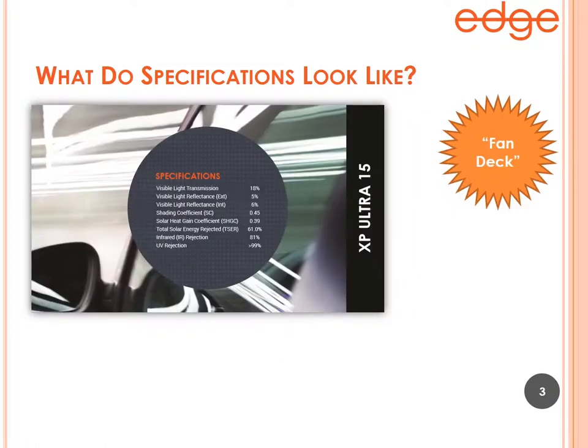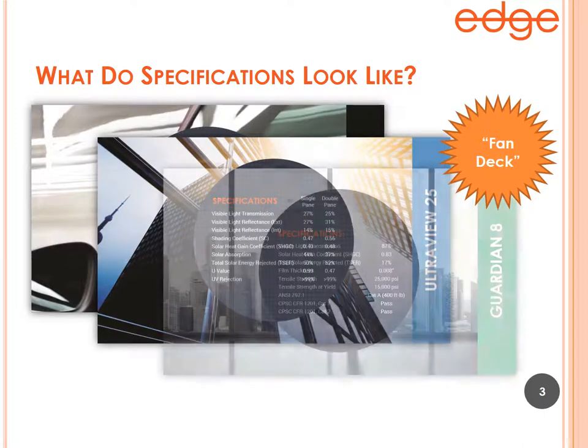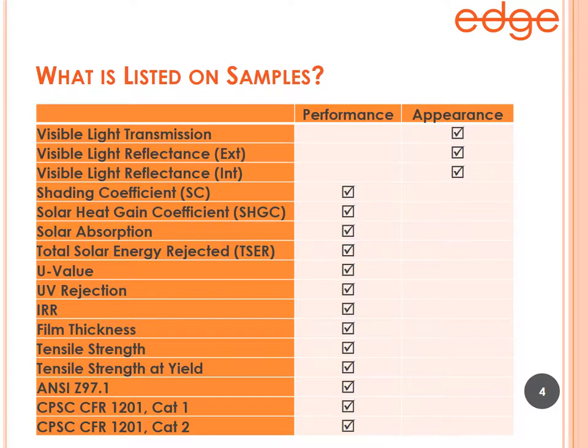That's one place where you might find a list of specifications for a product on Edge Films. Another place is what we call our fan deck — it's a book of film samples, approximately four by seven inches, with a screw post in the corner so you can fan through the samples. It's a slightly different graphical presentation, but it contains the same list of specifications: automotive, architectural, and security film.